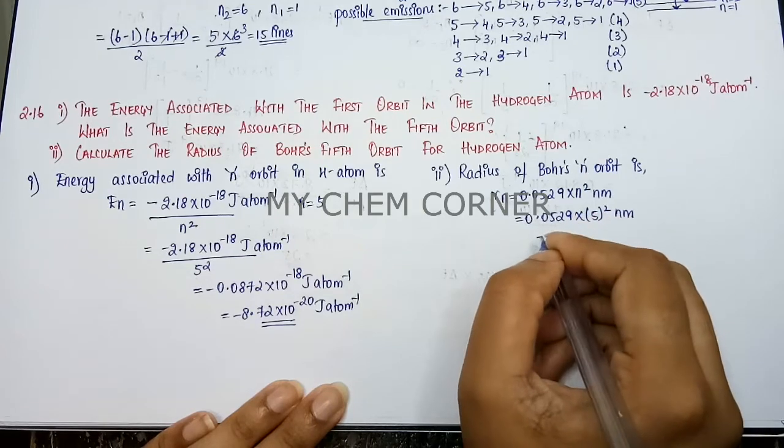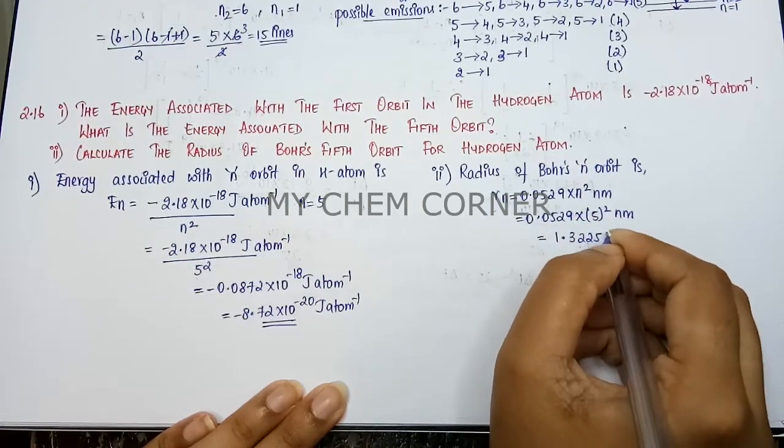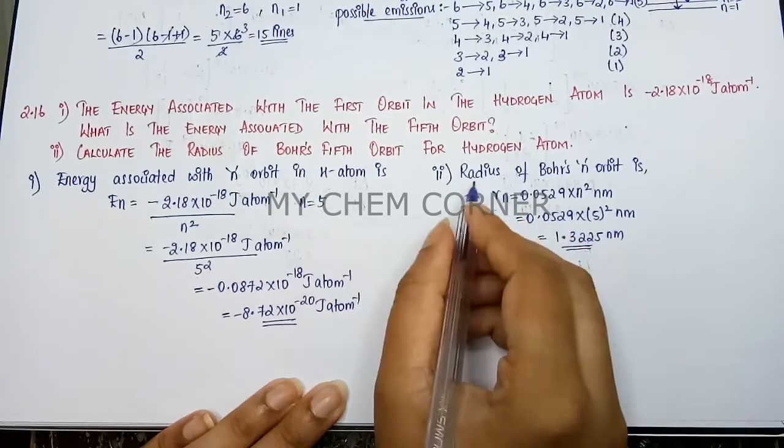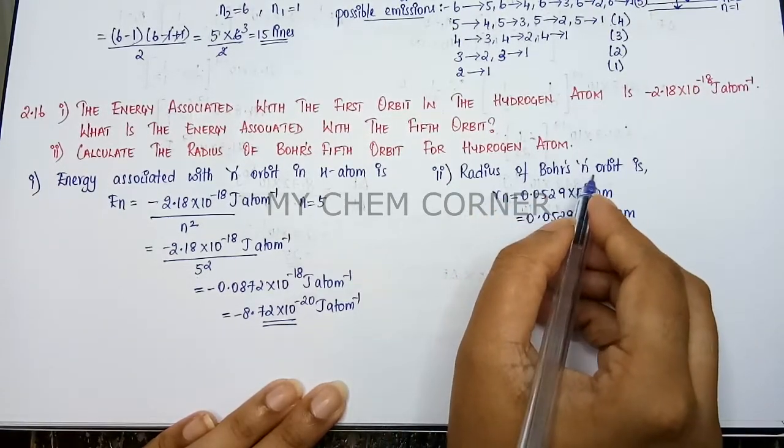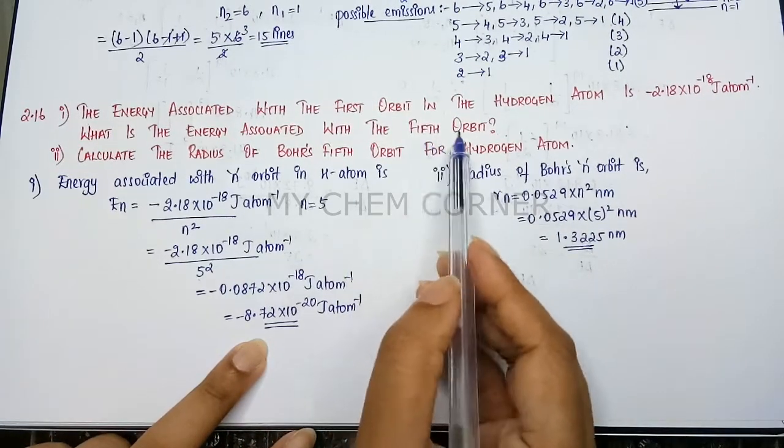When you square this and multiply here you will get 1.3225 nm. So this is the radius of Bohr's fifth orbit and this is going to be the energy related to the fifth orbit.